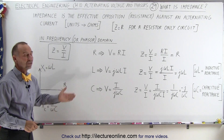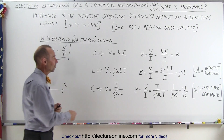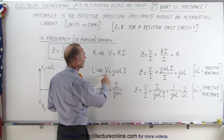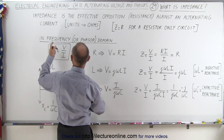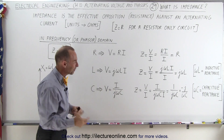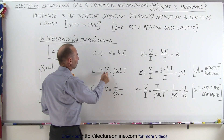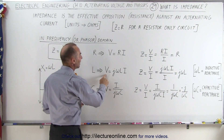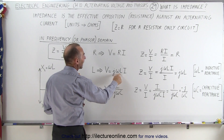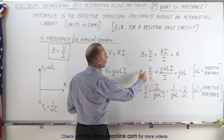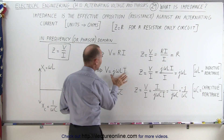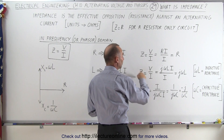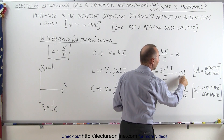But for inductors and capacitors, it's a different story. When we look at the voltage across an inductor in the frequency domain — or the phasor domain — it's equal to j omega L times I. Since impedance is the voltage divided by the current, we replace the voltage by this and cancel out the currents, so the impedance is defined as j times omega L.